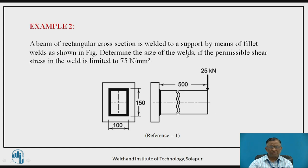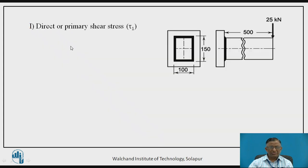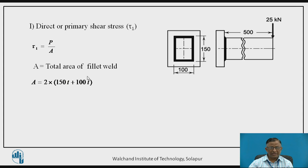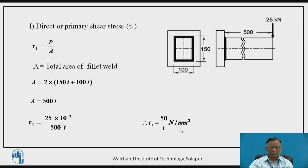Now let us consider one more example where a rectangular beam is subjected to an eccentric load, but here the weld is a box-type section — two horizontal welds and two vertical welds following the rectangular section of the beam. The horizontal length is 150 mm and the vertical length is 100 mm. Again, this is a cantilever beam subjected to bending load, so the weld section experiences combined primary shear stress and bending stress. The primary shear stress tau_1 = load / area, where total area = 2 × 150T + 2 × 100T = 500T, giving tau_1 = 50 / T N/mm².